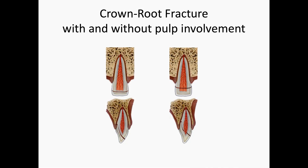Next, we have crown-root fractures, which can be described as with and without pulp involvement. These fractures involve the enamel, dentin, and cementum and are further classified by the presence or absence of pulp involvement. Uncomplicated and complicated fractures can involve the root as well. In the emergency department, these fractures will be clinically indistinguishable if the coronal fragment remains in place. If the coronal fragment is lost, one may distinguish a fracture involving the pulp and root by the visible pink color of the pulp or visible blood. This fracture type will be painful, tender to palpation, and stimuli. For the treatment, if the coronal fragment is in situ, stabilizing the tooth segment to the adjacent teeth using a splint is the treatment of choice. Please see instructions on application of a flexible splint in the next video. If the coronal fragment is lost, then proceed as with the previously described enamel-dentin fracture treatment.